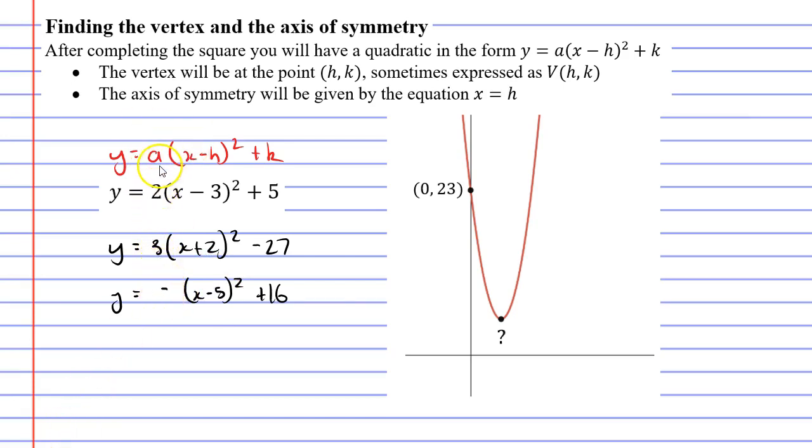Now in this video we're not going to worry so much about the pronumeral a, but the pronumerals h and k are really important here. I want to focus on this equation here, so I'm going to get rid of the other two. You will notice that h equals 3, and that k equals 5.